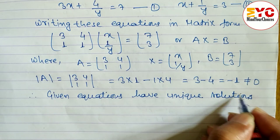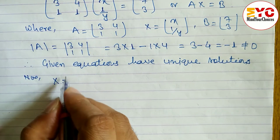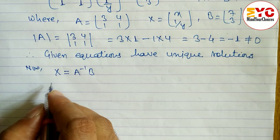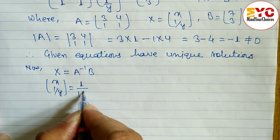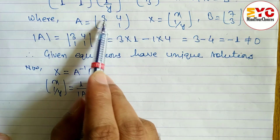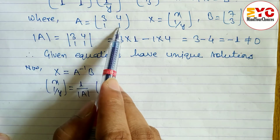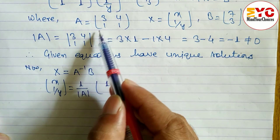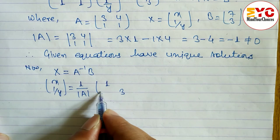As taught in previous videos, X equals A inverse times B. The value of X here is the column matrix [x; 1/y]. To find A inverse, we use 1 divided by the determinant of A, multiplied by the adjoint of A. To find the adjoint of A, we interchange the places of the main diagonal elements — 3 and 1 become 1 and 3. For the non-diagonal elements, we change the sign: plus 4 becomes minus 4, so we get [1, -4; -1, 3].